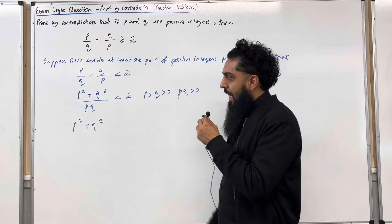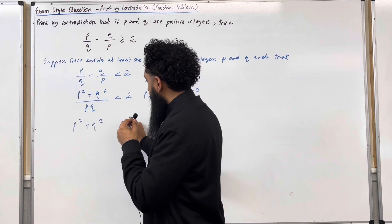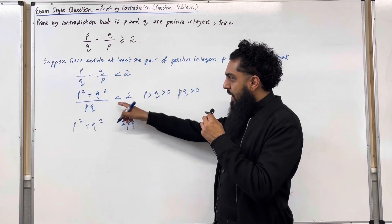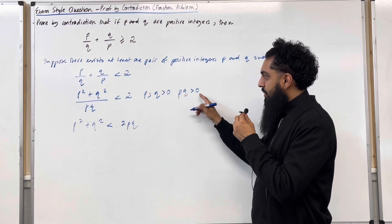So on the left-hand side, I'll have p squared plus q squared. And on the right-hand side, I will have 2pq. Now this inequality stays as less than because we know that the product, p times q, is more than 0.